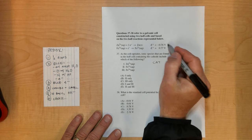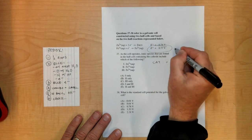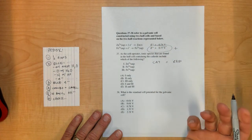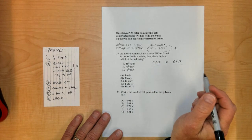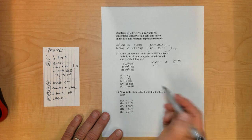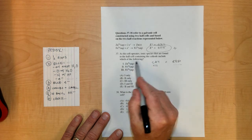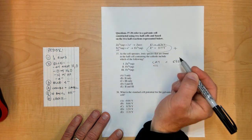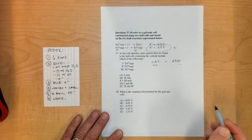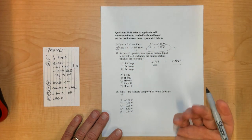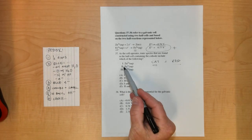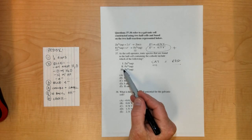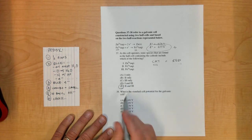The cathode is the one that undergoes reduction, and the reduced one is the one that has the most positive E cell, or the most positive standard reduction potential. If you look at these two numbers, you can see that this one is the most positive. So iron plus 3 and iron plus 2 are in the cathode. That's Roman numeral 2 and Roman numeral 3, which is E.